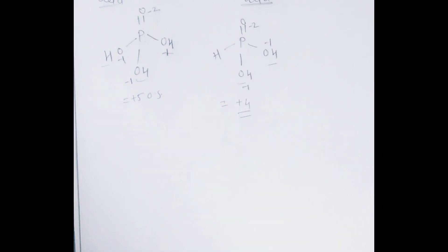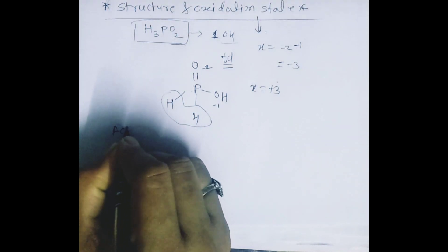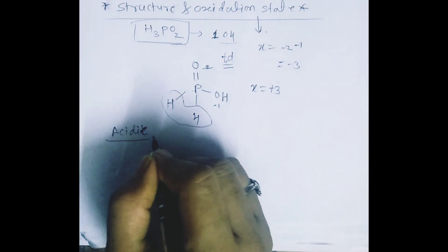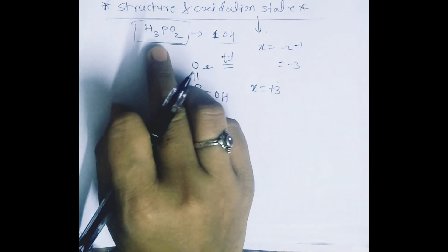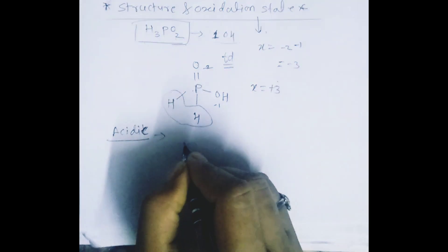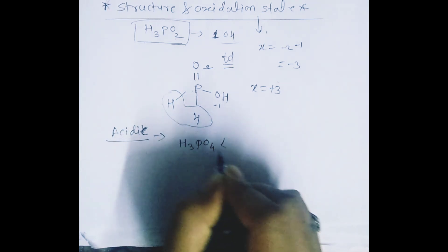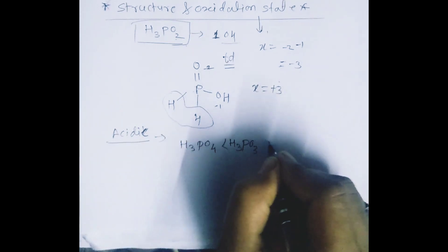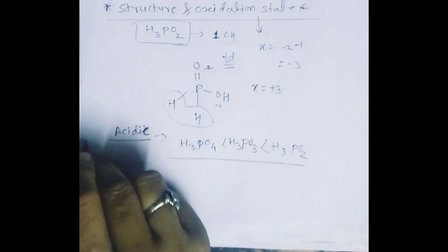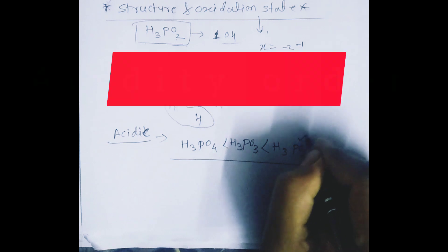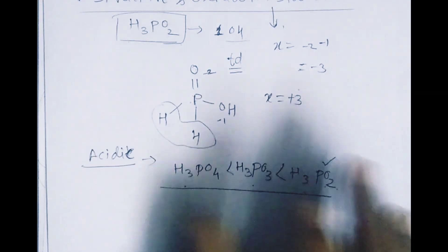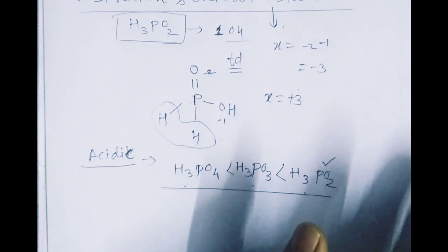From the above examples, the acidity order is: H3PO4 is less acidic than H3PO3, which is less acidic than H3PO2 — meaning H3PO2 with maximum oxidation state is the most acidic. This was the explanation about the phosphorus acids. If you like this video, please like and subscribe.